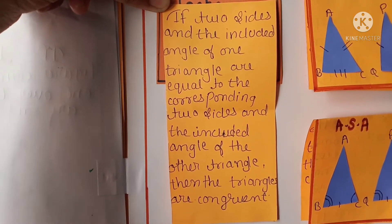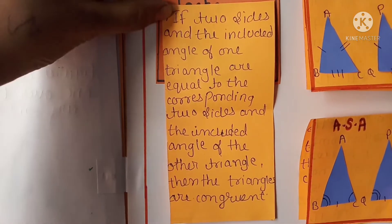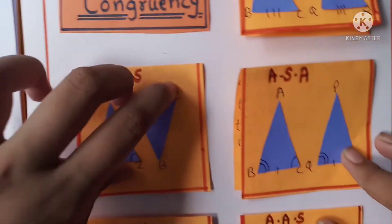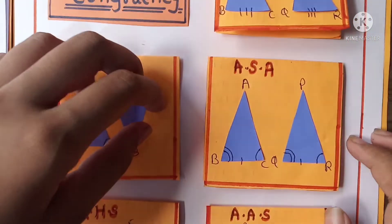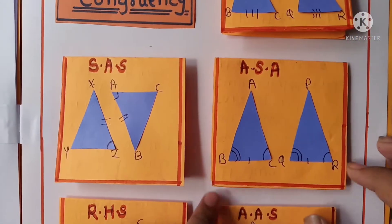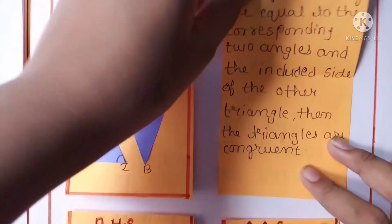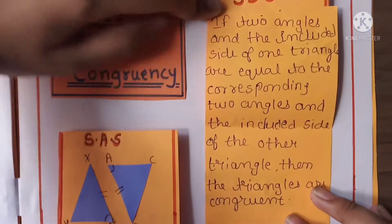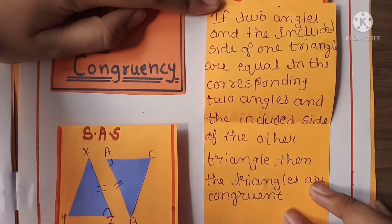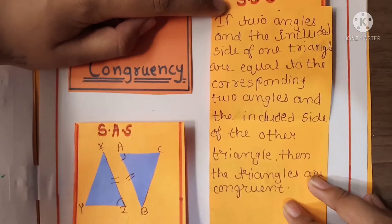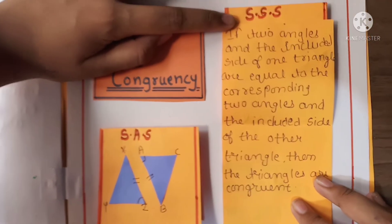Here is the next test: Angle-Side-Angle. Here is the figure and the information. If two angles and the included side of one triangle are equal to the corresponding two angles and the included side of the other triangle, then the triangles are congruent.